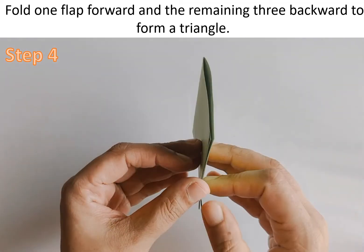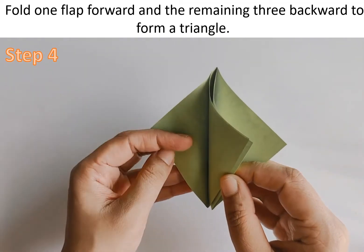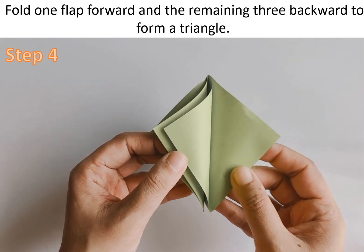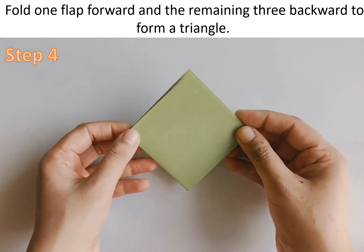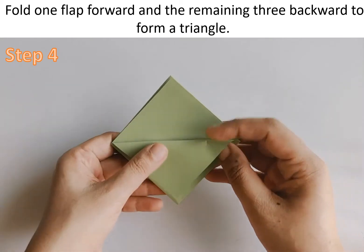Step 4. Now we will get a square with 4 flaps. Fold one flap forward and the remaining 3 backward to form a triangle.